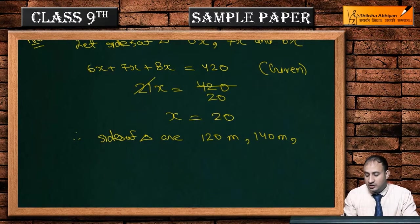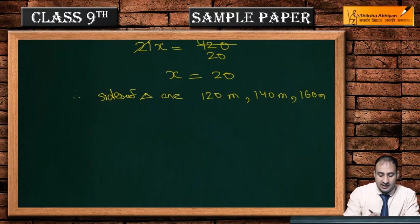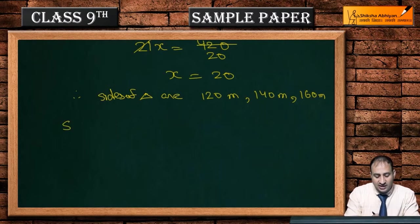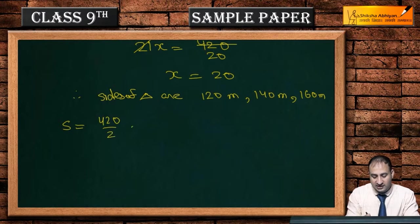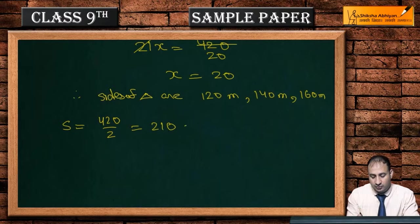Continuing the calculation, we get 66,150,000. Taking the square root gives us approximately 7,360 square meters. This is the area of the triangle using Heron's formula.